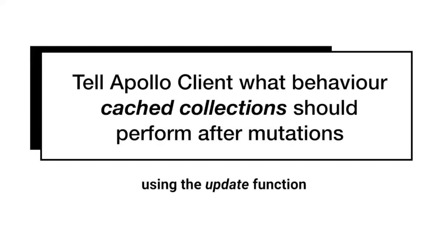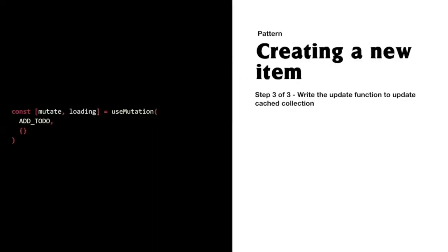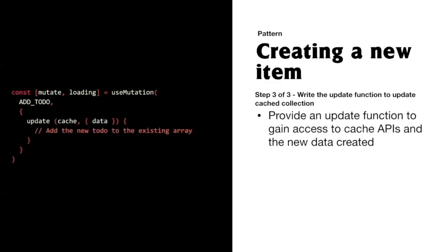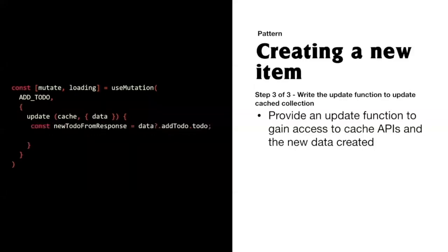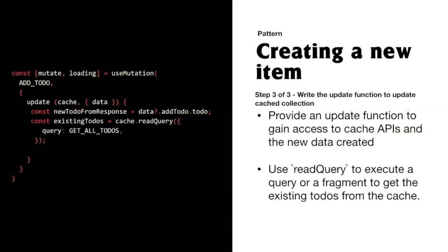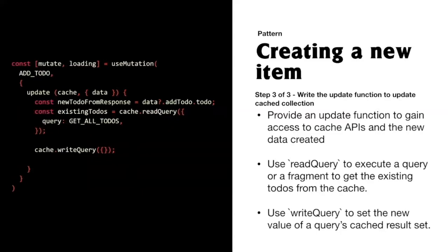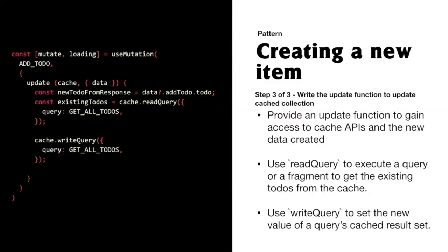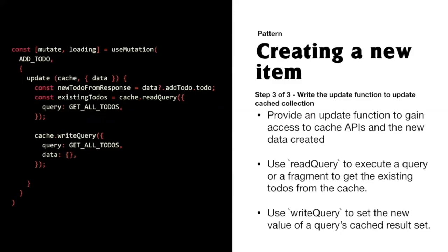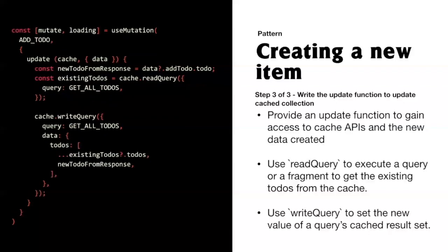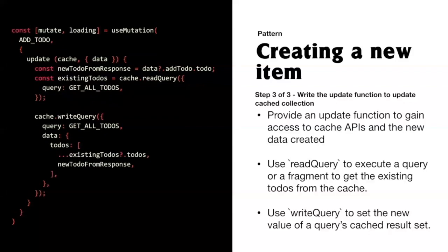We need to tell Apollo Client what behavior we want when interacting with cached collections after mutations, and the way to do that is using the update function. Going back to our mutation, we pass in an object with an update function defined. We want to add the new to-do to the existing array of to-dos saved as a cached collection. We pull the new to-do from the response, use readQuery to get the existing to-dos from the cache, then use writeQuery to set the new value — passing the query and the new data, which is all previous to-dos plus the newly added one.